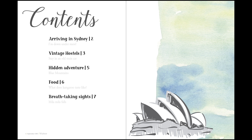Down at the bottom corner, you can see what in magazine anatomy would be called a folio. It's really small — it's just kind of like a reference for the reader.